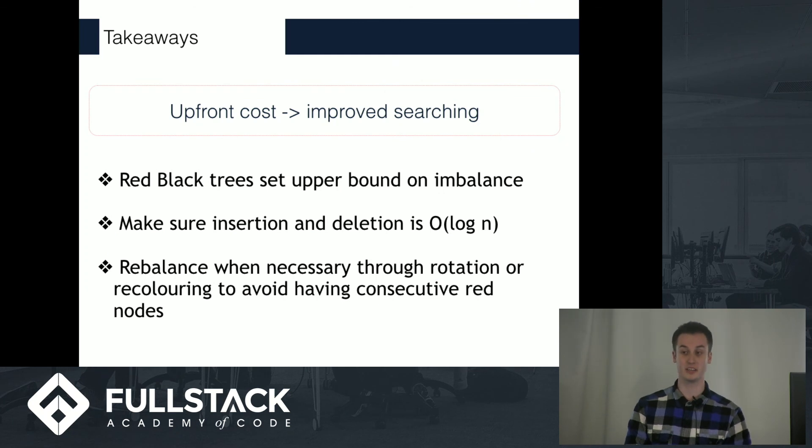Some key takeaways from this - I don't expect anyone to memorize how to do any of the rotations, but red-black trees and other self-balancing trees set an upper bound on the imbalance of a tree, so that we can search more efficiently. They ensure that both insertion and deletion, which I didn't show, is an O(log n) rather than O(n) operation, which a typical binary search tree would be in its worst case.